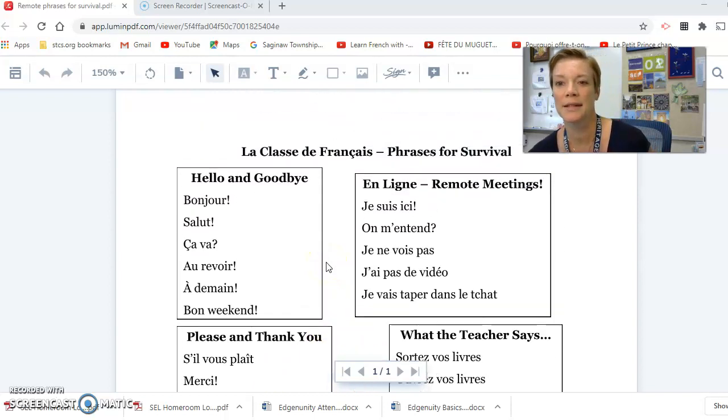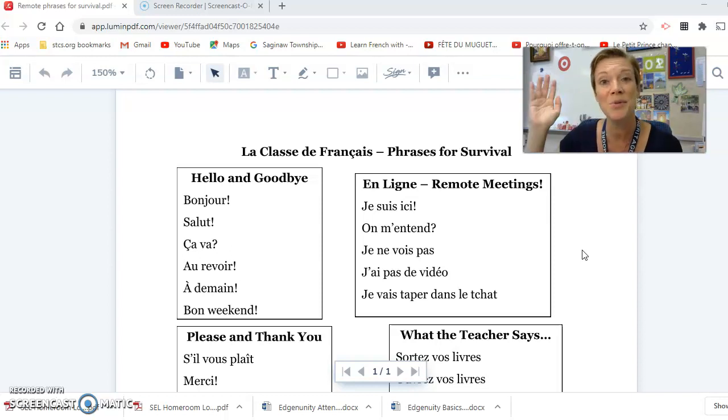I'm going to bump on over now to the online remote meetings box. These are things you can say when we log on to our Zoom meetings and we're getting ready to start class. So if you're here, of course, you're going to say bonjour madame, bonjour class. And you can also say je suis ici. I'm here. On m'entend? Can y'all hear me? Can people hear me? Je ne vois pas. I can't see. If you can't see the screen or what's supposed to be happening in class. Je n'ai pas de vidéo. Some of you didn't have cameras that worked today. So you gave me little thumbs up emojis and things like that. So if you're not having video, if you don't have a camera, that's what you'd say. Je n'ai pas de video.